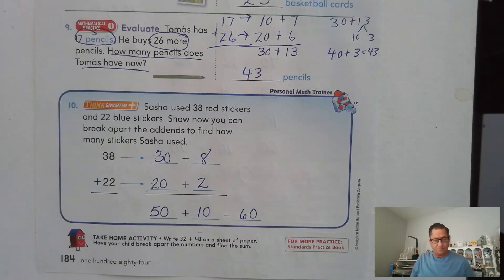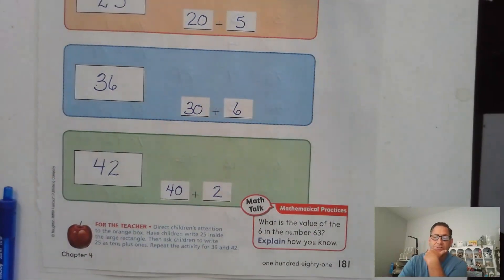So that's it for the idea of breaking apart addends as tens and ones to find the sum of two-digit numbers. Until our next lesson, I'll see you soon.